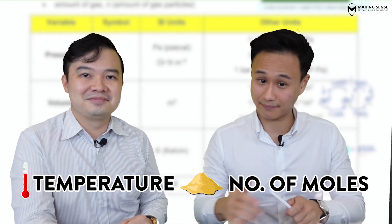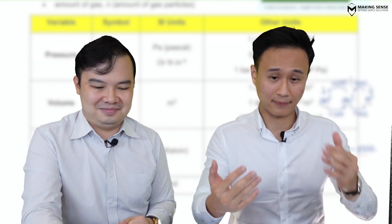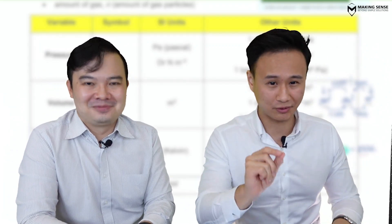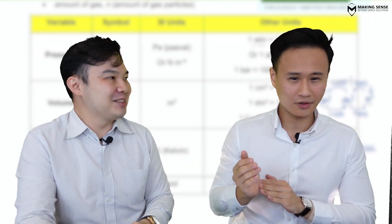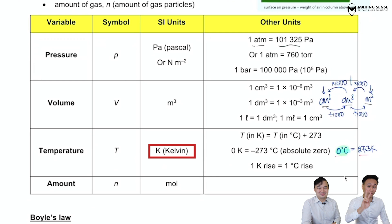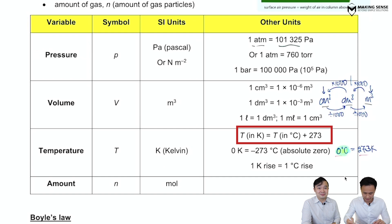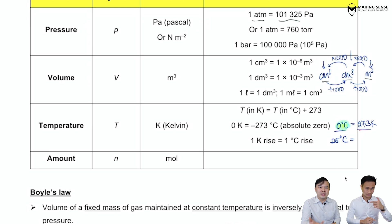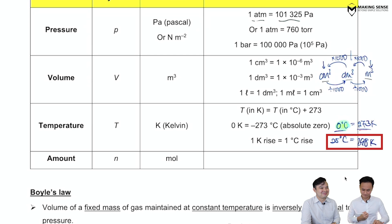Temperature is basically a measure of how hot or how cool something is. You are comfortable with degrees Celsius, but the SI unit for temperature is kelvin. To convert degrees Celsius to kelvin, you just add 273. So zero degrees is 273 K. For example, 25°C plus 273 gives you 298 kelvin.